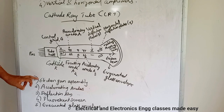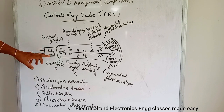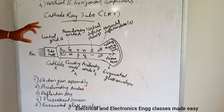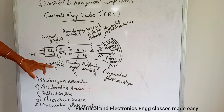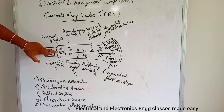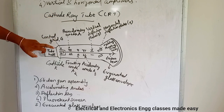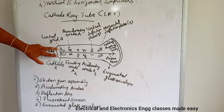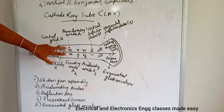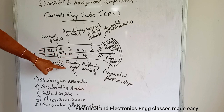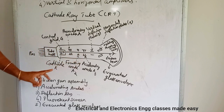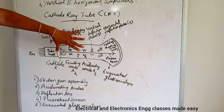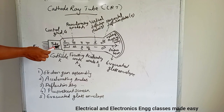Now let us study these components in detail. The first is the electron gun assembly. The electron gun assembly consists of: the indirectly heated cathode, a control grid G, pre-accelerating anode A1, focusing anode A2, and accelerating anode A3. These are the components of the electron gun.